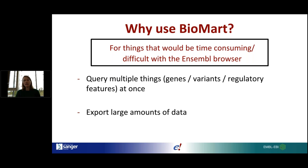BioMart is useful for simplifying queries that might be repetitive, time-consuming, or just difficult with the browser. If you have a list of genes, genetic variants, or regulatory features and want to find out roughly the same information about all of them, you could do that in the browser sequentially, but if you have 30 items it becomes tedious. With BioMart you can set up a single query for your whole list and extract the data in bulk.